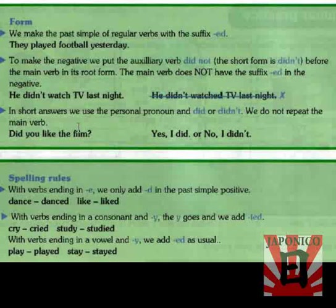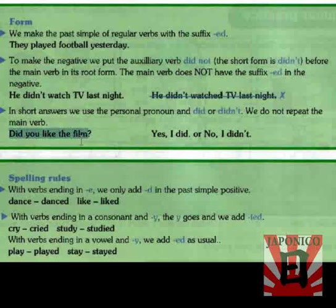In short answers, we use the personal pronoun and 'did' or 'didn't'. We do not repeat the main verb. For example: 'Did you like the film?' — 'Yes, I did' or 'No, I didn't.'